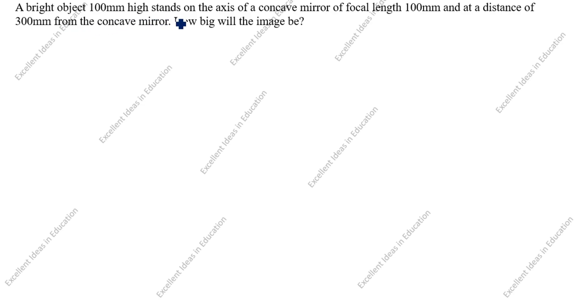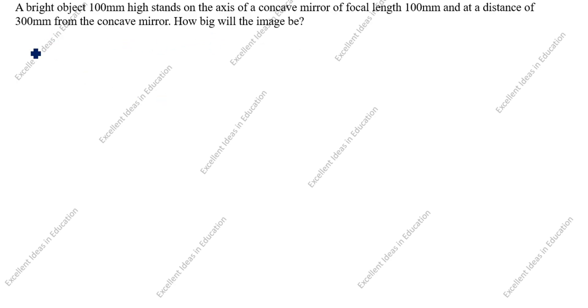A bright object 100 mm high stands on the axis of a concave mirror of focal length 100 mm, and at a distance of 300 mm from the concave mirror. How big will that image be?